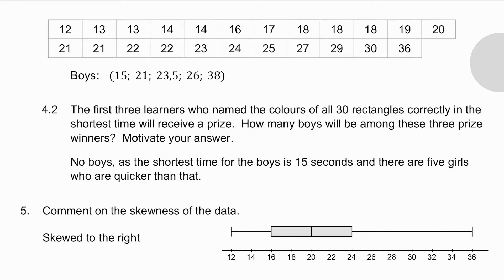4.2 says to you the first 3 learners who name the colours of the rectangles correctly in the shortest time will receive a prize. How many boys will there be? Well, from the 5 number summary of the boys, the fastest any boy named these rectangles was 15 seconds. If I look at the girls, 5 of them named the rectangles in a quicker time. They were only giving prizes to the first 3 learners. How many boys were among the prize winners? There were no boys. The shortest time for the boys was 15 seconds. And there were 5 girls who were quicker than that.